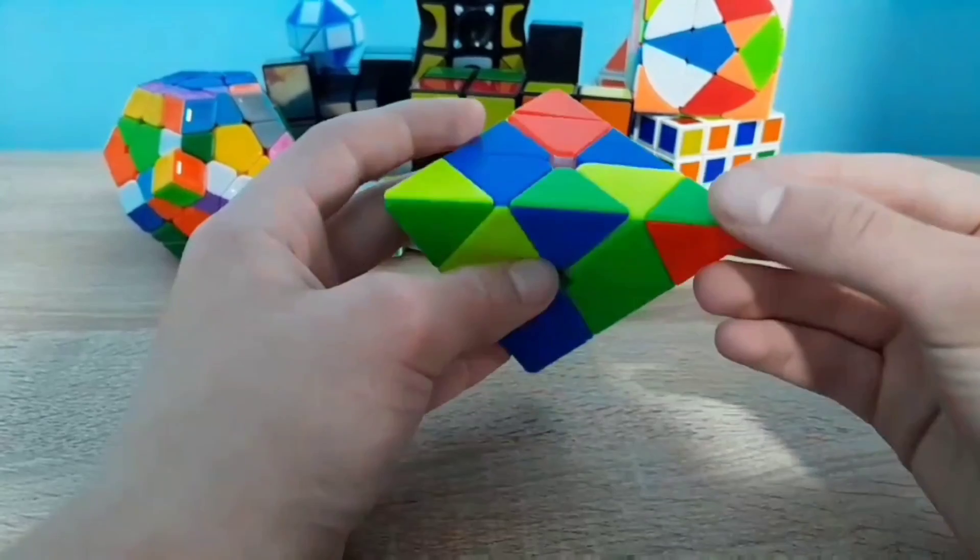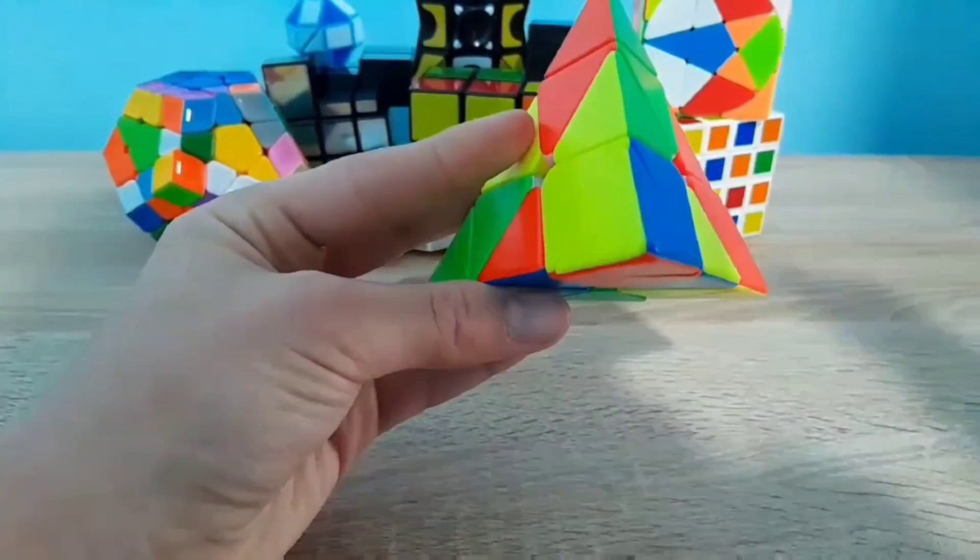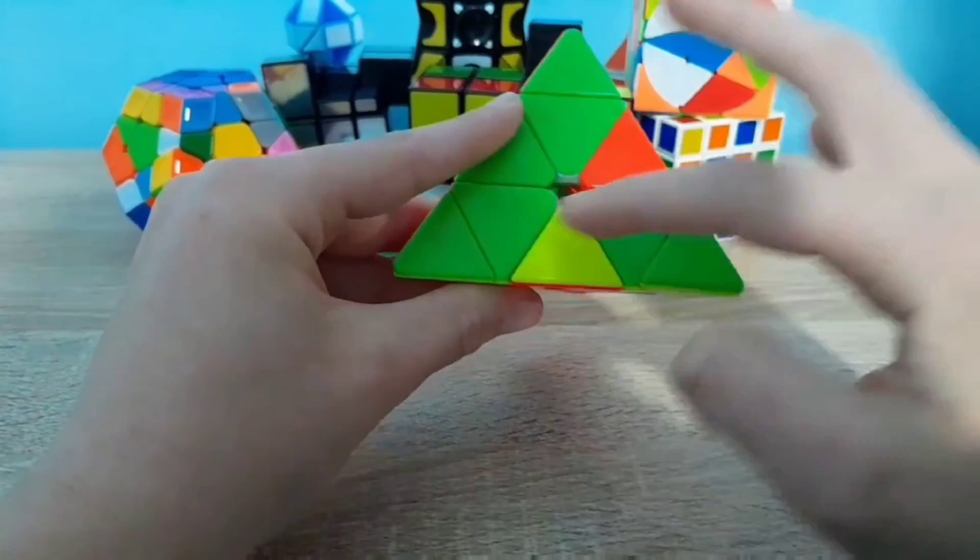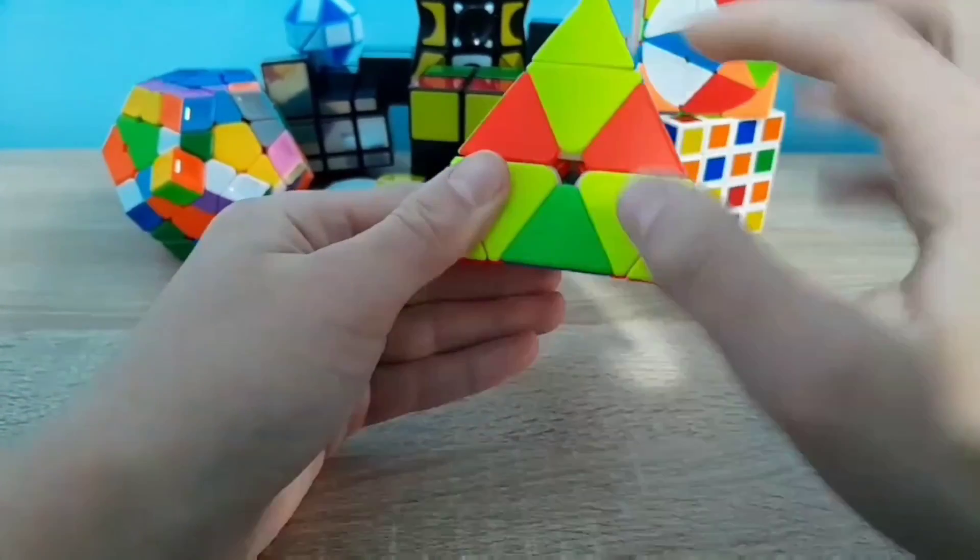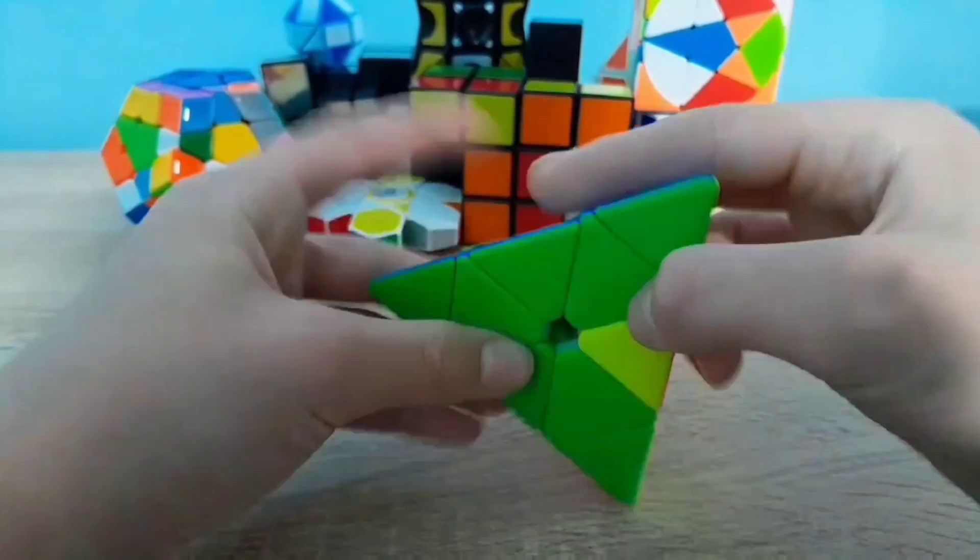The first cube is Pyraminx. First is to turn the tops to match the adjacent color. The next step is to match the color centers. The next move is to solve one color and the entire first row.